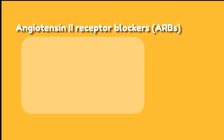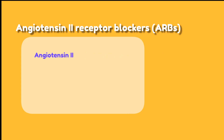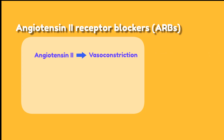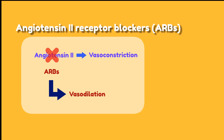Angiotensin-2 receptor blockers, or ARBs, work by blocking angiotensin-2, a hormone stimulated by the kidneys. When the body secretes this hormone, it causes vasoconstriction in the arteries, which raises blood pressure. ARB medications block this hormone, causing vasodilation, which in turn decreases blood pressure.